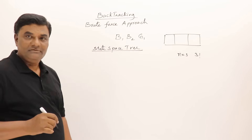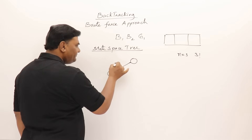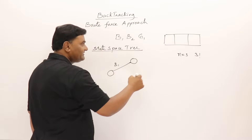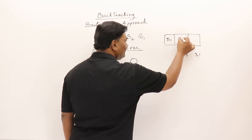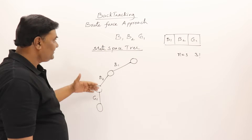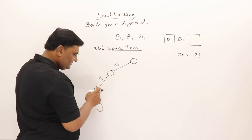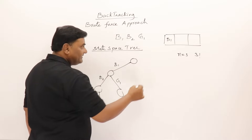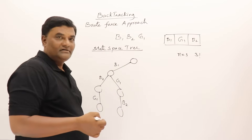Let us generate the state space tree and solve this problem. This is the starting of the solution. In the first level we consider each student. Let us say boy one is sitting in the first chair. Next, for the second chair, boy two can sit there, and then girl one sits in the third. Now for another arrangement, take out girl one and go back — no other possibility — so take out boy two also. In the second place girl one can sit, then boy two can sit in third place. That gives one more solution.